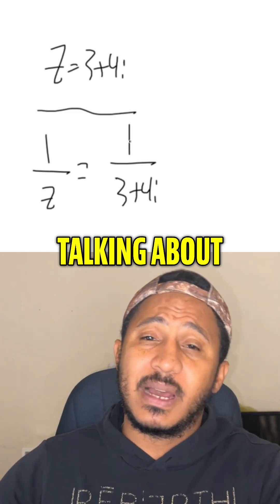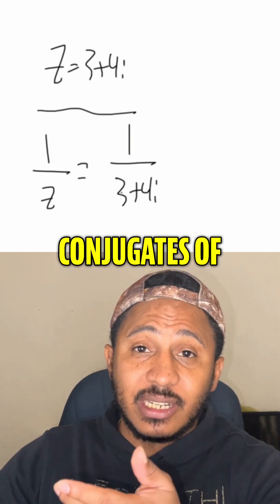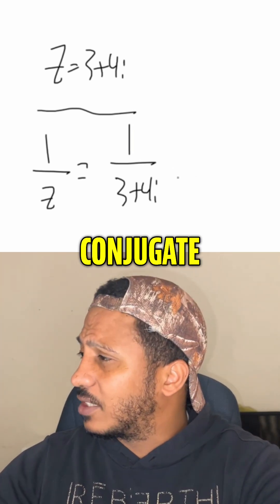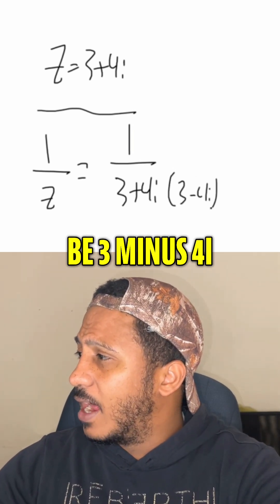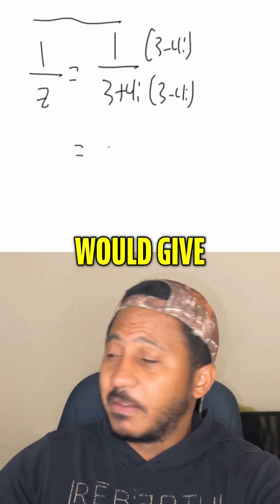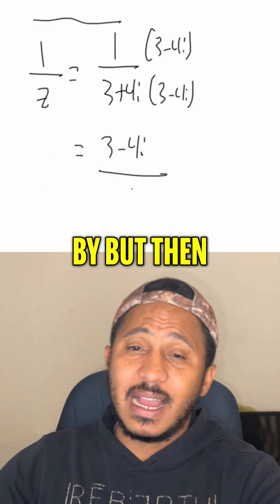So that's why we say multiply by the conjugate of that denominator, meaning the conjugate of 3 plus 4i. So the conjugate would be 3 minus 4i. But if I do it to the bottom, I've got to do it to the top. So I would get 3 minus 4i divided by